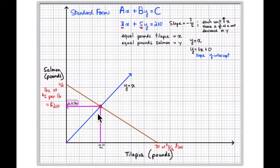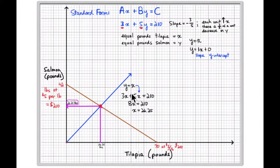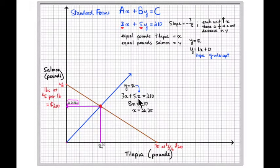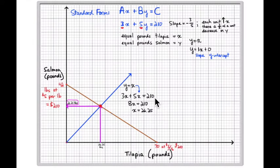It also solves the first equation, 3x + 5y = 210, because three dollars times twenty-six and a quarter pounds plus five dollars times twenty-six and a quarter pounds adds together to equal $210. So this point is a solution to both equations represented by each of these lines. Now if I use y equals x and replace y with x, I have 3x + 5x = 210.